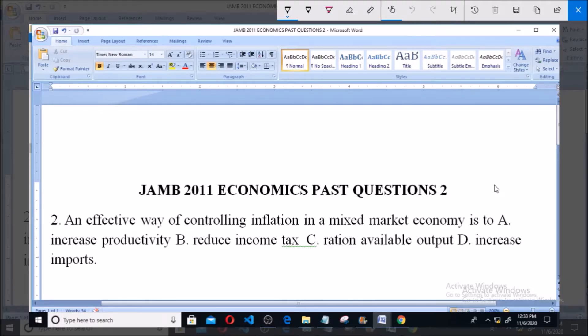Welcome to JAMB 2011 past question. Question number two says: an effective way of controlling inflation in a mixed market economy is to A. increase productivity, B. reduce income tax, C. ration available output, D. increase imports.